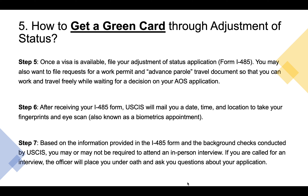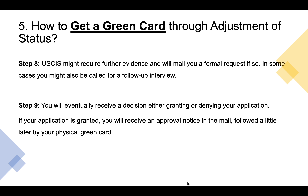After receiving your I-485 form, USCIS will mail you a date, time, and location to take your fingerprints and iris scan — this is also known as the biometrics appointment. Step seven: based on the information in your I-485 and the background check, you may or may not be required to attend an in-person interview. If called for an interview, the officer will place you under oath and ask questions about your application. Step eight: USCIS might require further evidence and will mail you a formal request if so; you might also be called for a follow-up interview. Step nine: you will eventually receive a decision either granting or denying your application. You can check your case status online at any time. If approved, you will receive an approval notice in the mail followed by your physical green card.